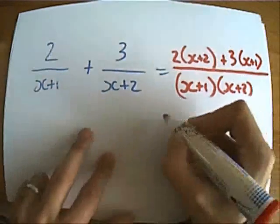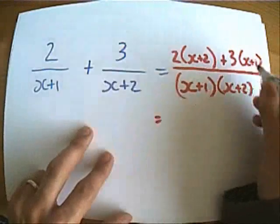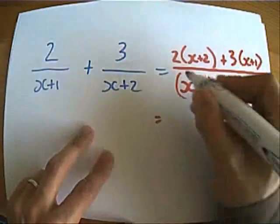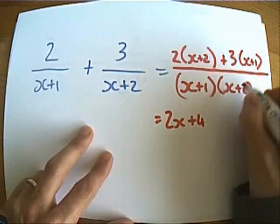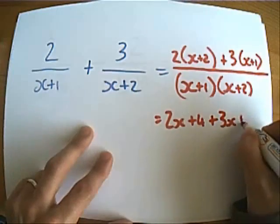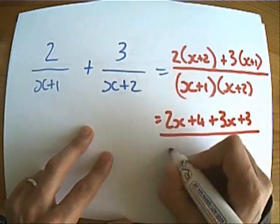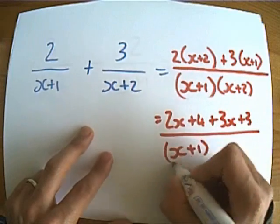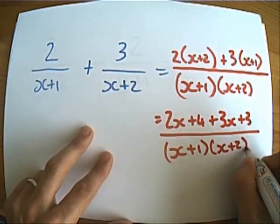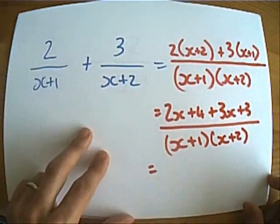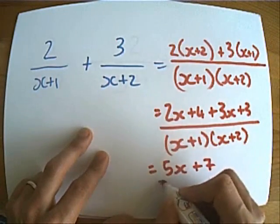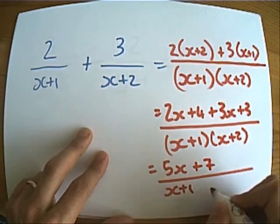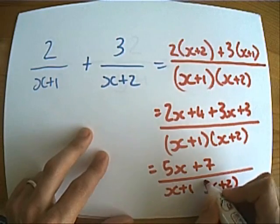And what we need to do now is to expand out the brackets on the top and tidy up and simplify. So let's expand the brackets on the top: 2x plus 4 plus 3x plus 3, all still over x plus 1 times x plus 2.